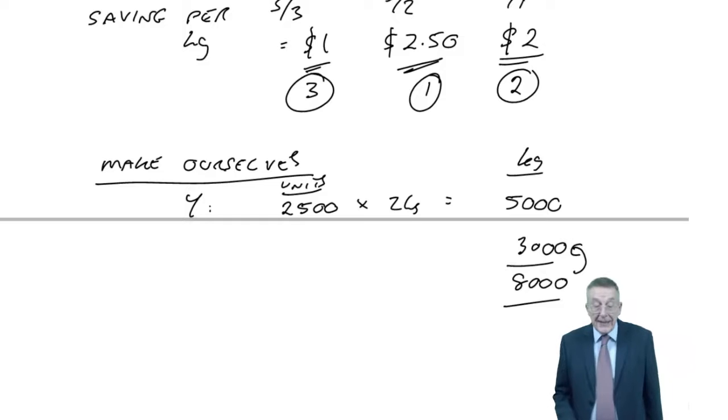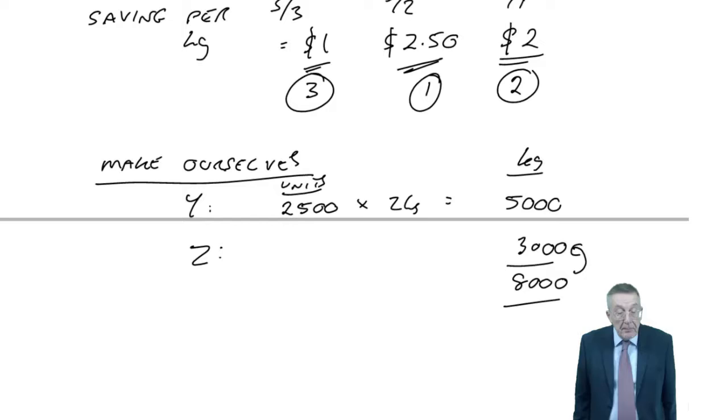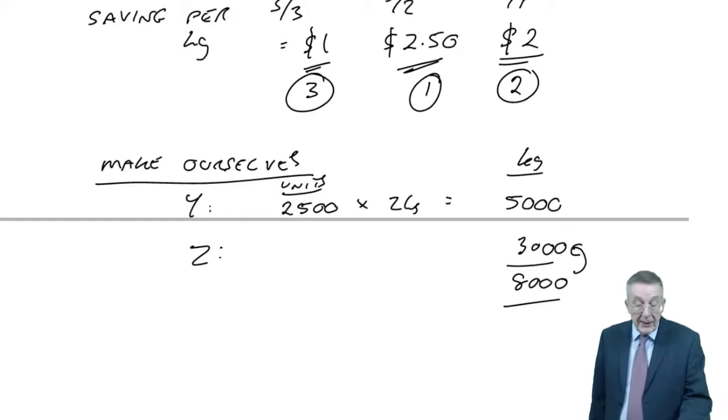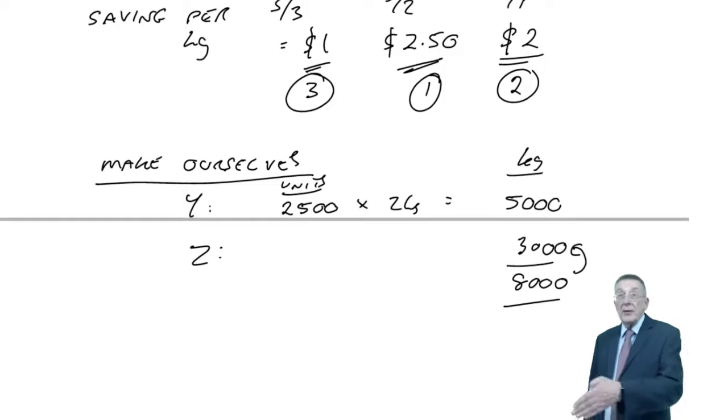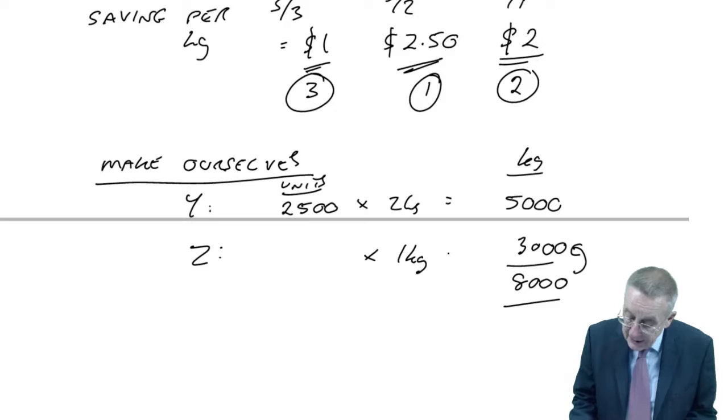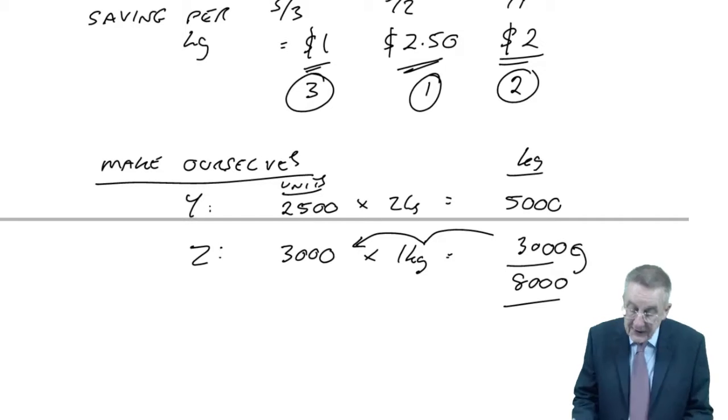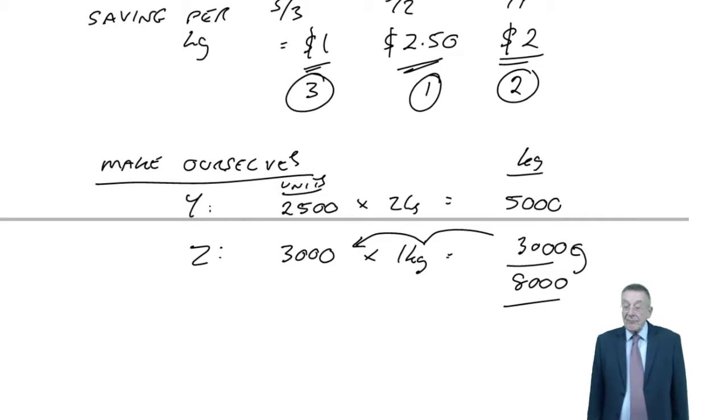What should we do with the 3,000? We'll go to the one that's next best, which was Z. The demand is 4,000 units, but we can't possibly make ourselves 4,000 units. It would need 4,000 kilos and we've only got 3,000. So we'll make as many Zs as we can. It's a kilo per unit, therefore we'll make 3,000 Zs. So that's what we'll make ourselves.